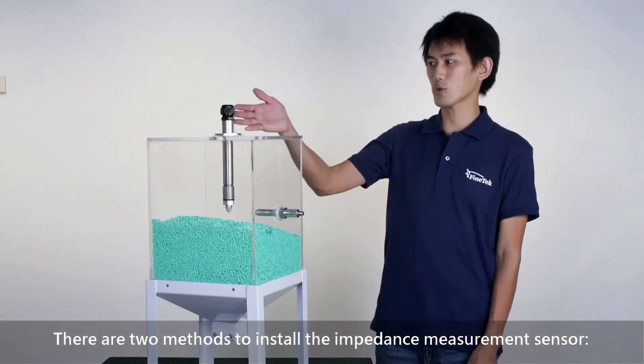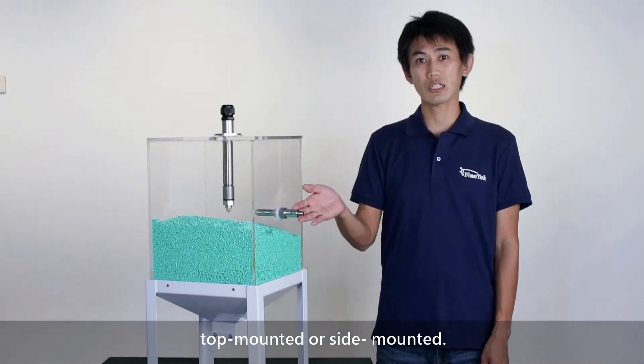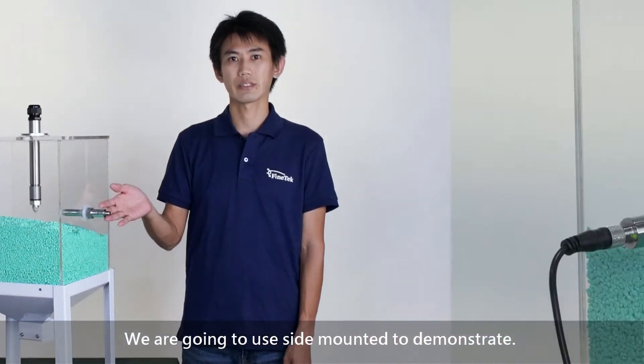There are two methods to install the impedance measurement sensor: top-mounted or side-mounted. We are going to use side-mounted to demonstrate.